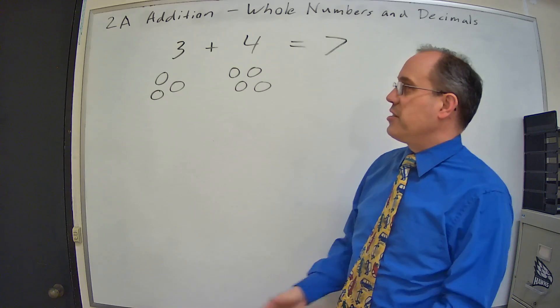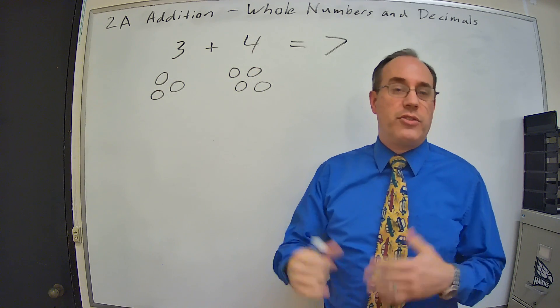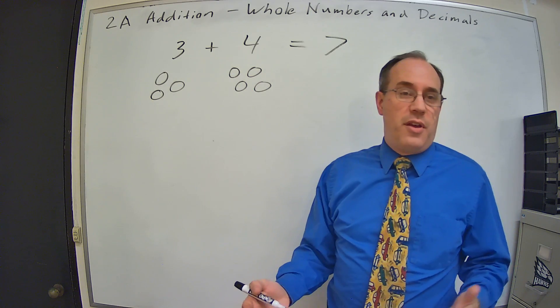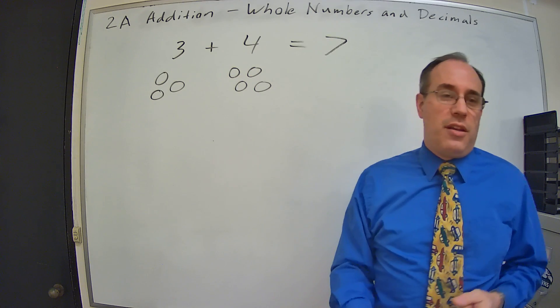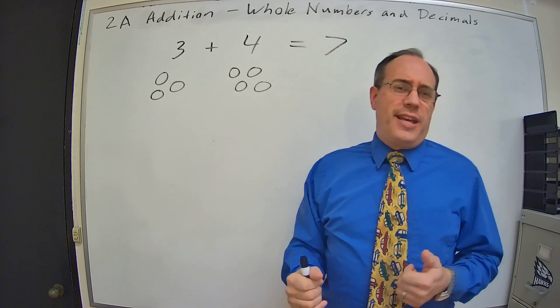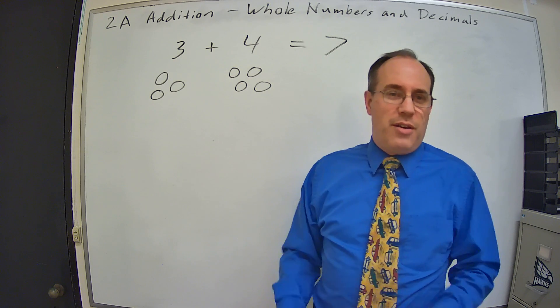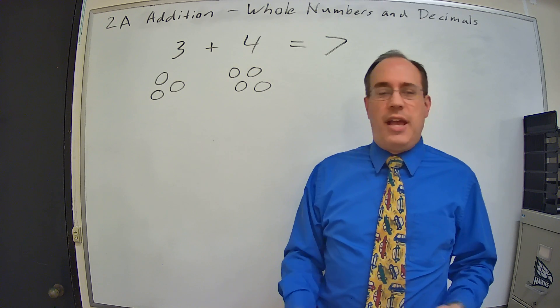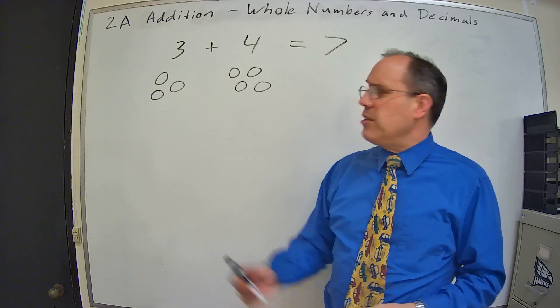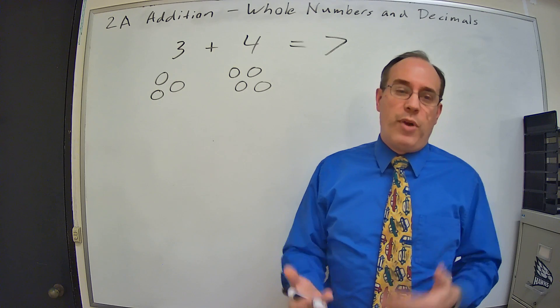So the idea of addition is just if you have something and you have more of it, how much do we have in total? So we can use pictures to do this, but as you can surmise, if we get into really large numbers, doing pictures might be a little difficult. If we're adding 57 and 69, that's a lot of circles and that's a lot of counting. So there's got to be a better way of doing it.